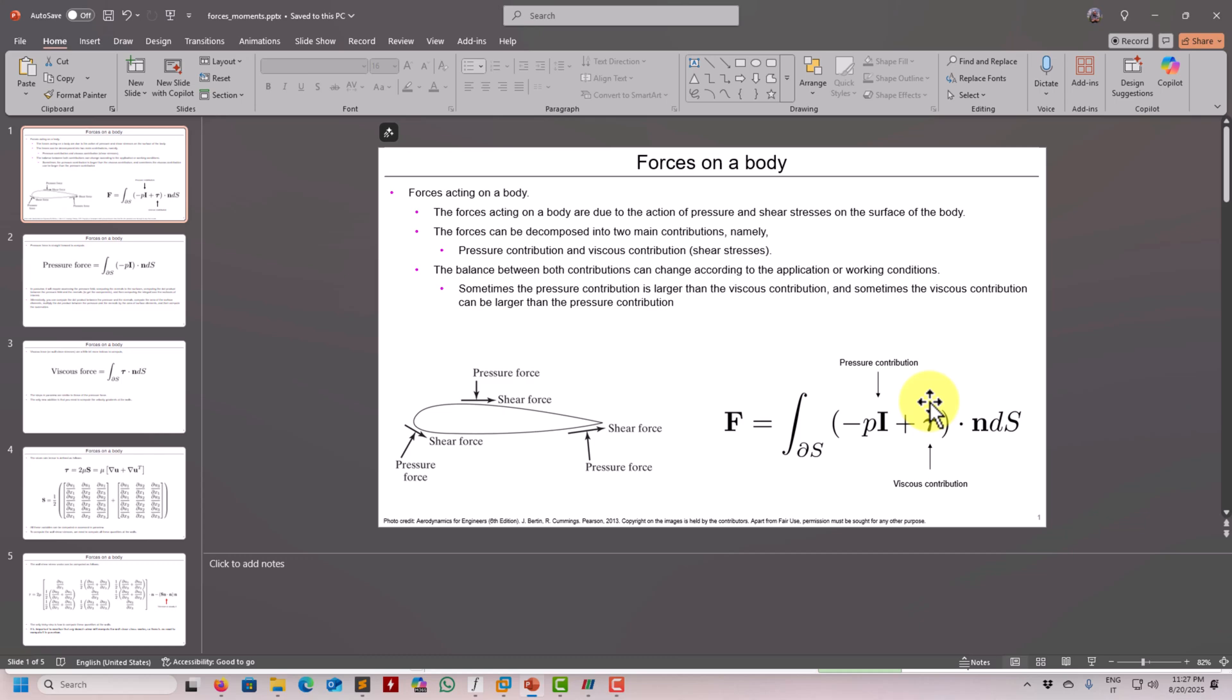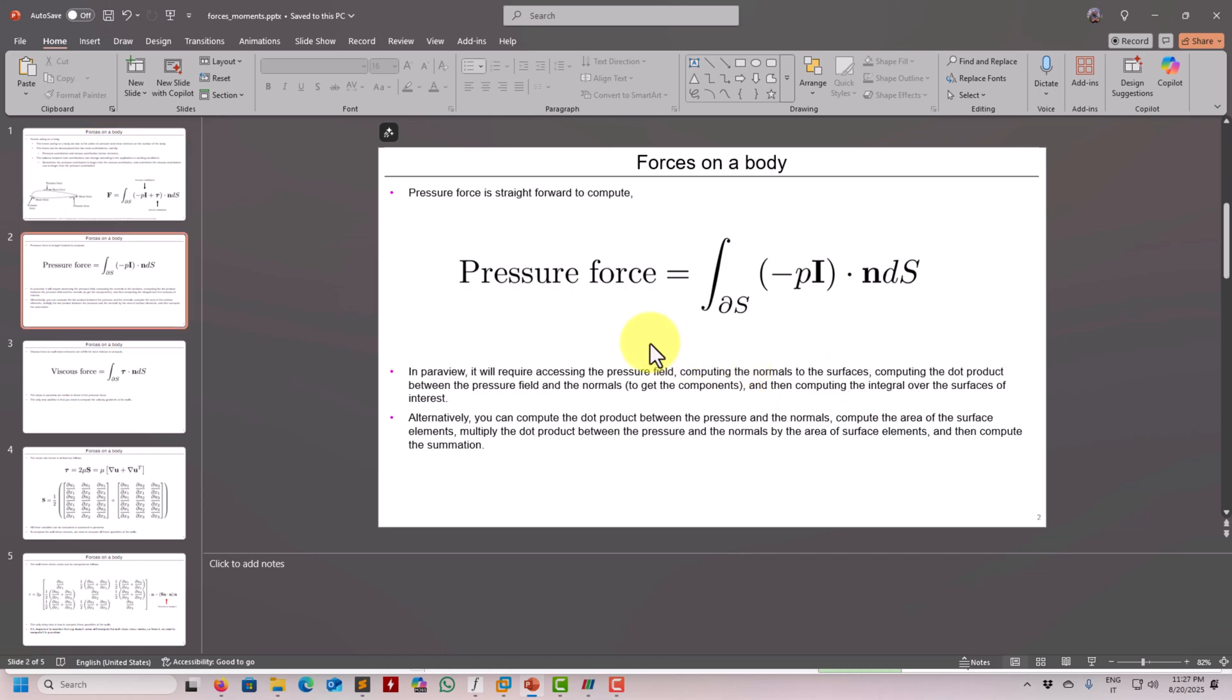Pressure force can be computed like this: we have the pressure field at the walls and in the whole field, so there's no problem. You compute the normals, dot that, and you get the pressure force in the components - in each of the axes. That's why we dot it with the normal and then multiply by the area or integrate to get the whole force.